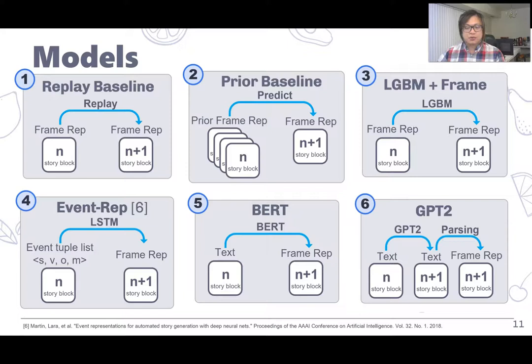Fifth, BERT, which is a straightforward one where we fit the text into BERT and predict the frame representation. The last one, GPT-2: we would like to see if the existing language generation model can generate text that also captures the semantic frames. So we use GPT-2 to generate a piece of text and parse it using OpenSesame to get the semantic representation and take that as the prediction.